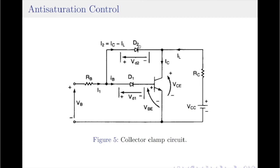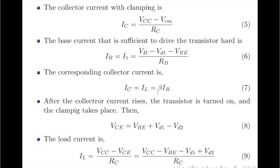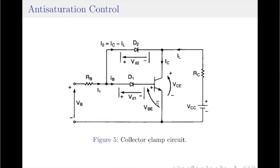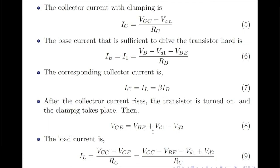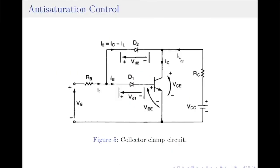Please note that in the absence of diode D2, the collector current equals the load current and therefore IC equals IL equals beta times IB. Once the collector current starts to rise, the transistor is said to be turned on. Once the transistor turns on, the collector current starts to rise and clamping takes place because diode D2 will now be forward-biased. The collector-to-emitter voltage is now given by VBE, VD1, and VD2. In equation form: VCE equals VBE plus VD1 minus VD2. In a similar fashion, we can write an expression for the load current IL, which is now different from the collector current IC because diode D2 is turned on — our clamping diode.